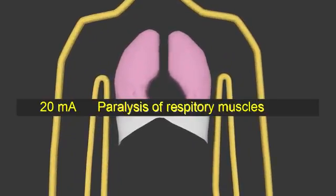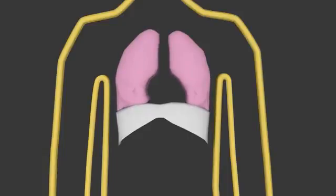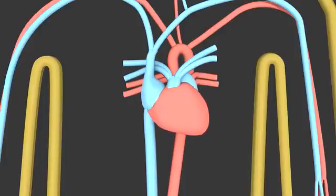At 20 milliamps AC, your respiratory muscles, the ones responsible for breathing, are paralyzed. That of course leads to death. The heart's pumping is controlled by electrical stimulation.